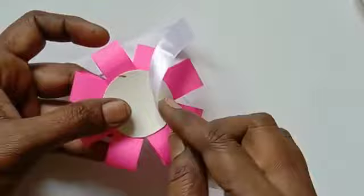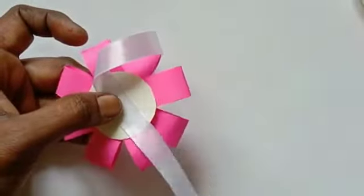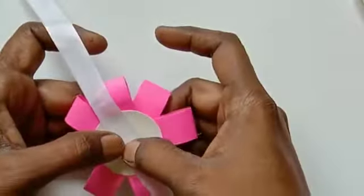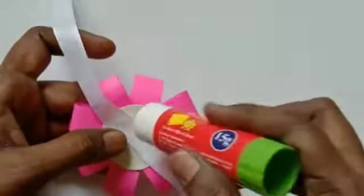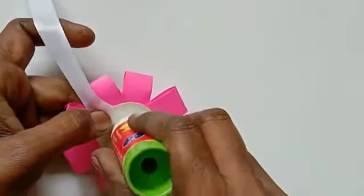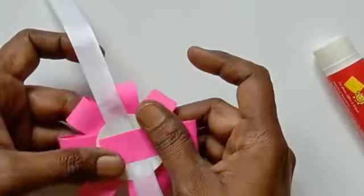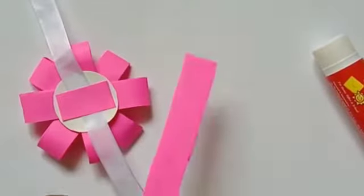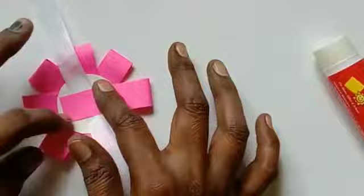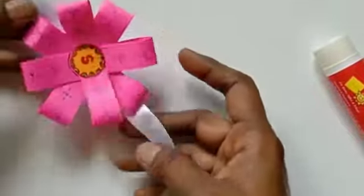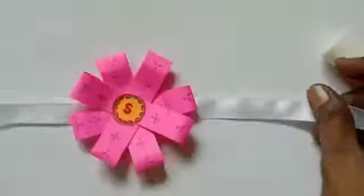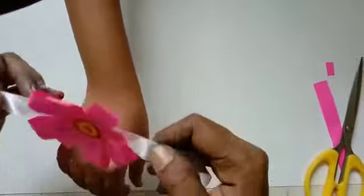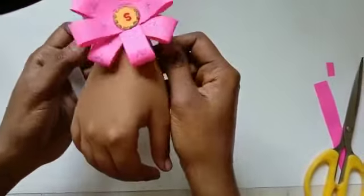Now, paste the ribbon. Apply some glue and paste a paper on it so that it will be strong. Our Rocky is ready to tie.